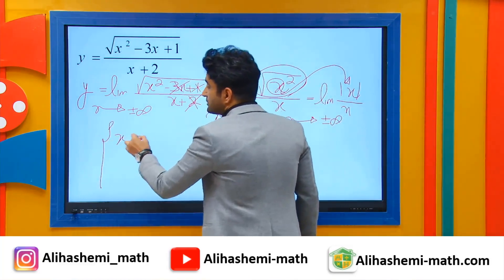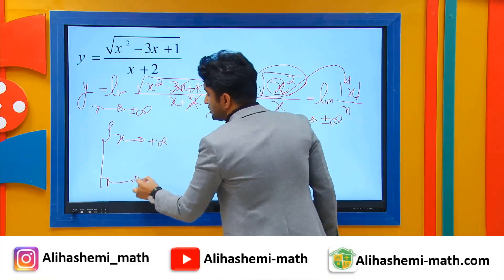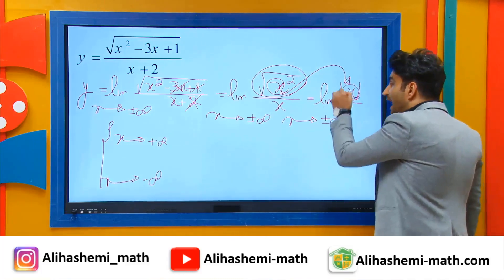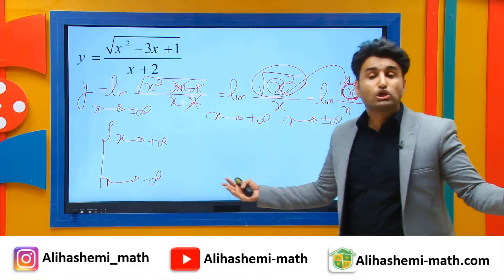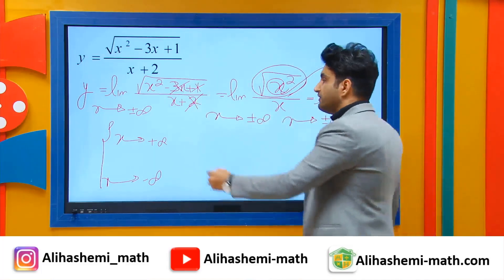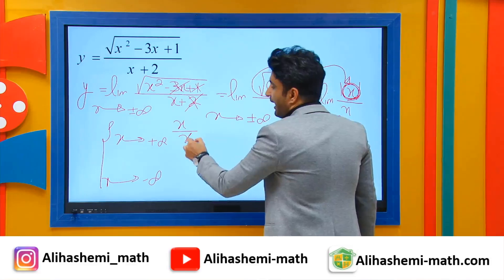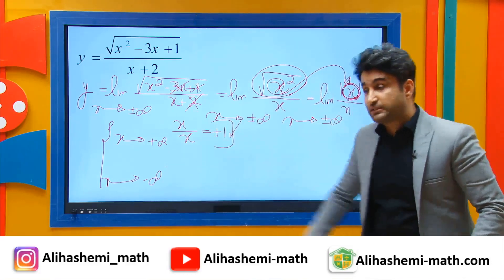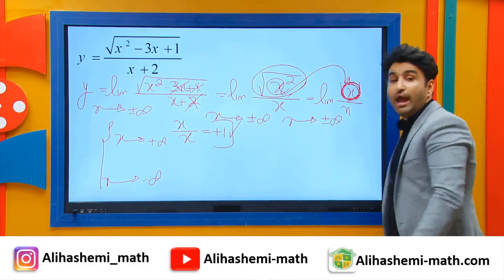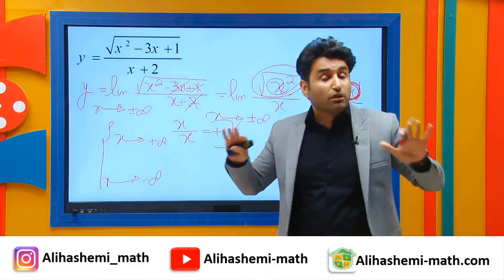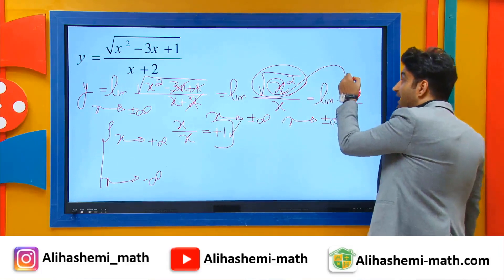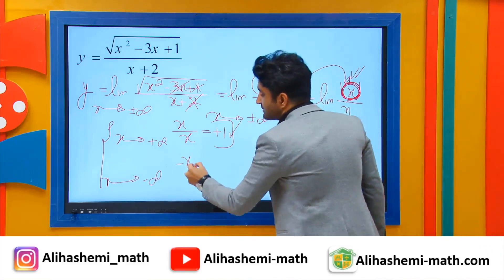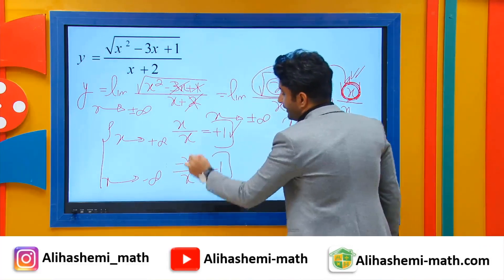So: one, when x approaches positive infinity, and when x approaches negative infinity. When x approaches positive infinity, inside the absolute value is positive, so we can drop the absolute value sign, which means I have x divided by x, and that gives me positive 1. On the other hand, when x approaches negative infinity, inside the absolute value is negative, so you must drop the absolute value sign but multiply the terms inside the absolute value by a negative number. Therefore, I have minus x divided by x, and that gives me negative 1.